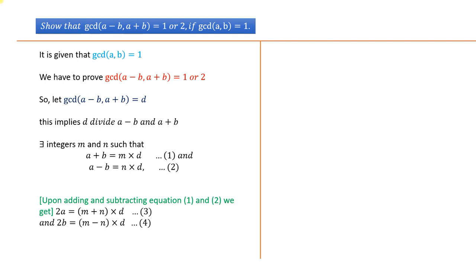Since GCD(a, b) = 1, therefore 2 × GCD(a, b) = 2. Therefore, GCD(2a, 2b) = 2.